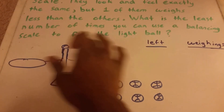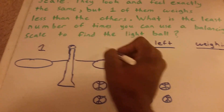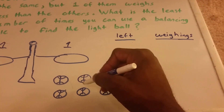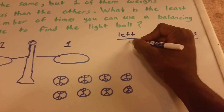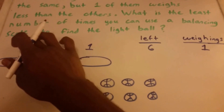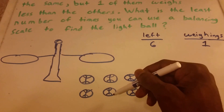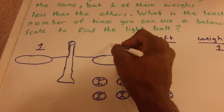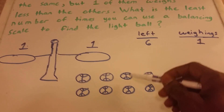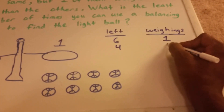Let's start. We pick one ball and put it on each side — they're the same. So now we have six balls left, and we just finished one weighing. We go back to our pile and pick our next two balls, put one on each side — they weigh the same. So now we have four balls left, and that was our second weighing.